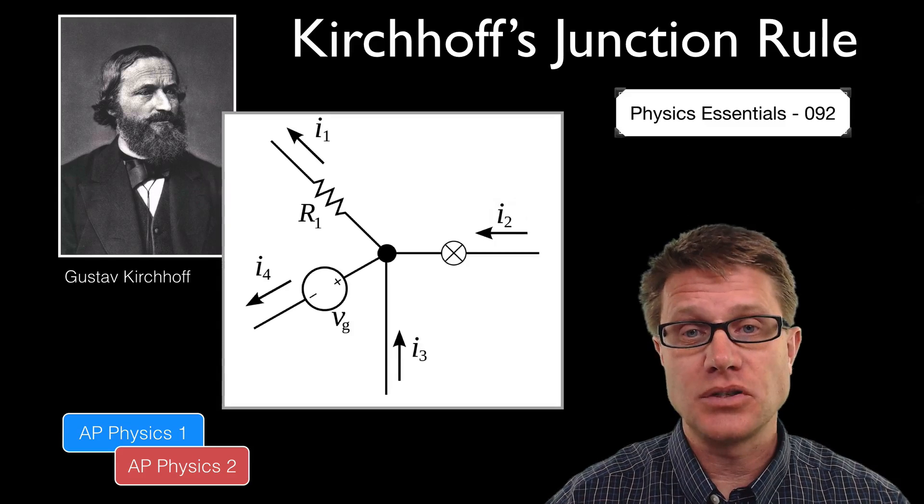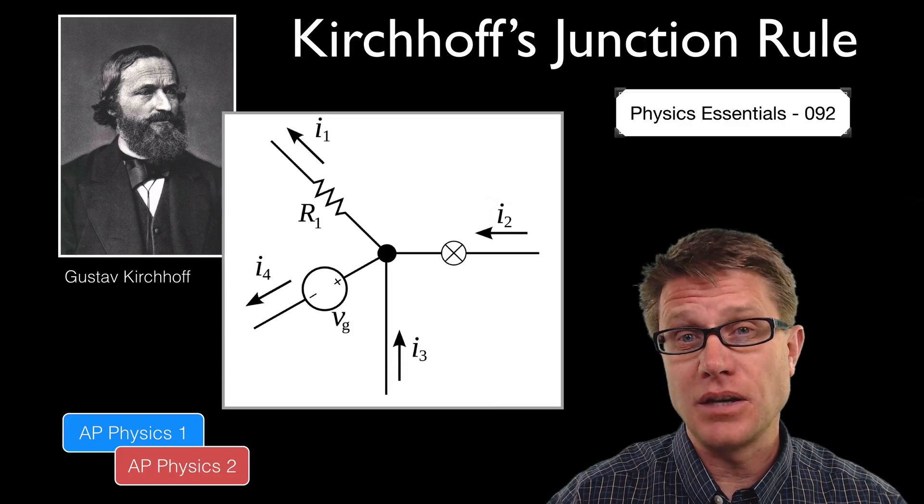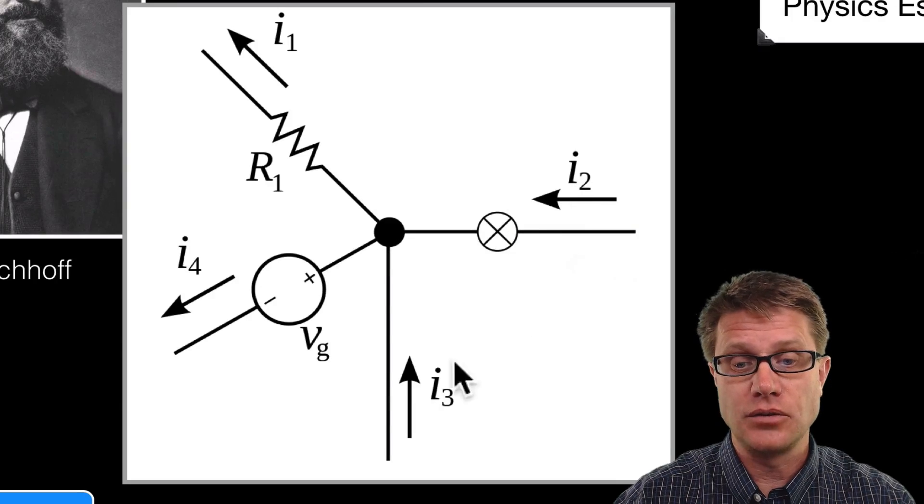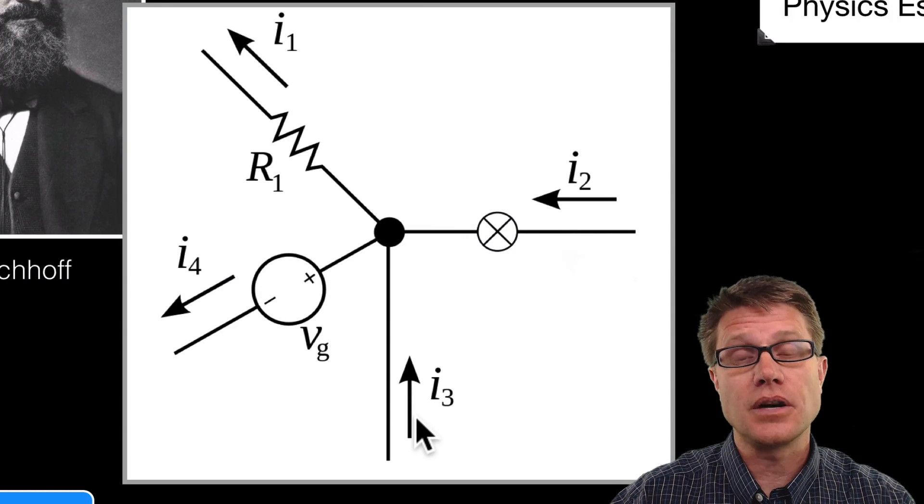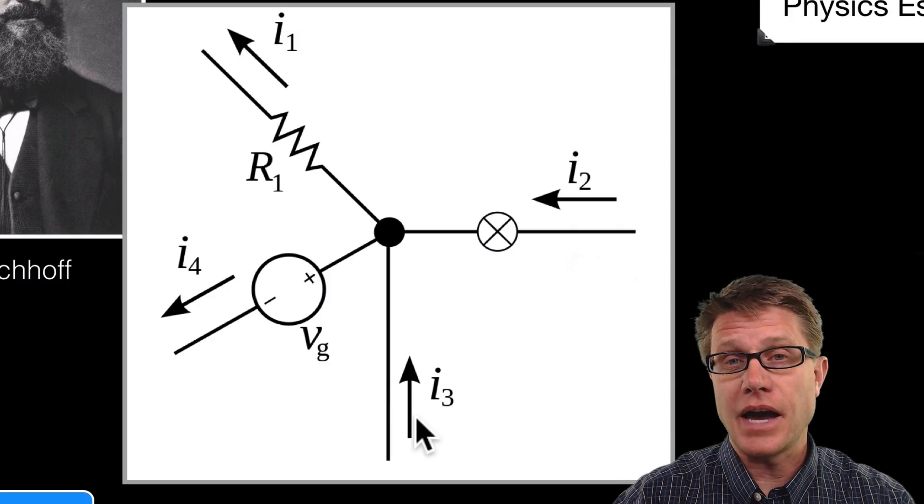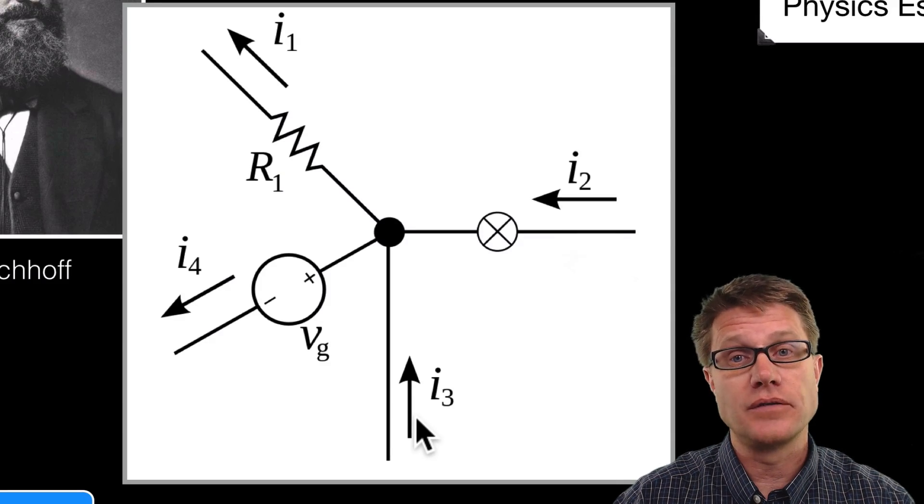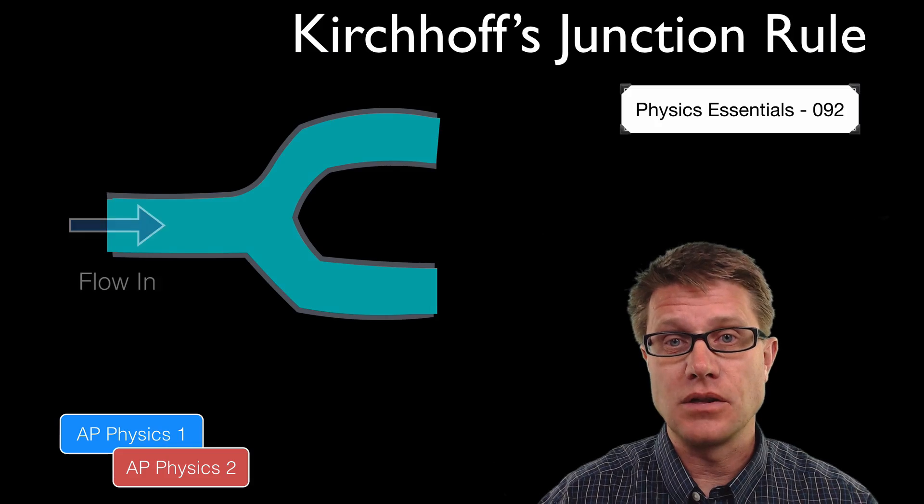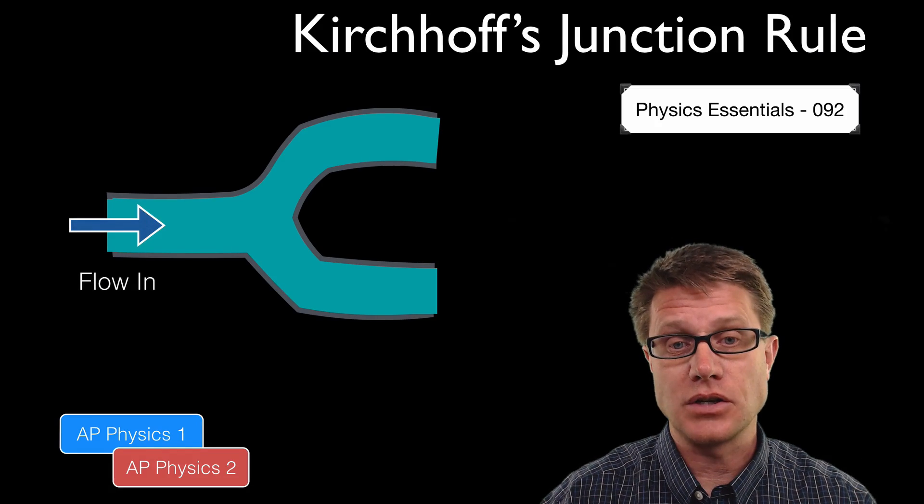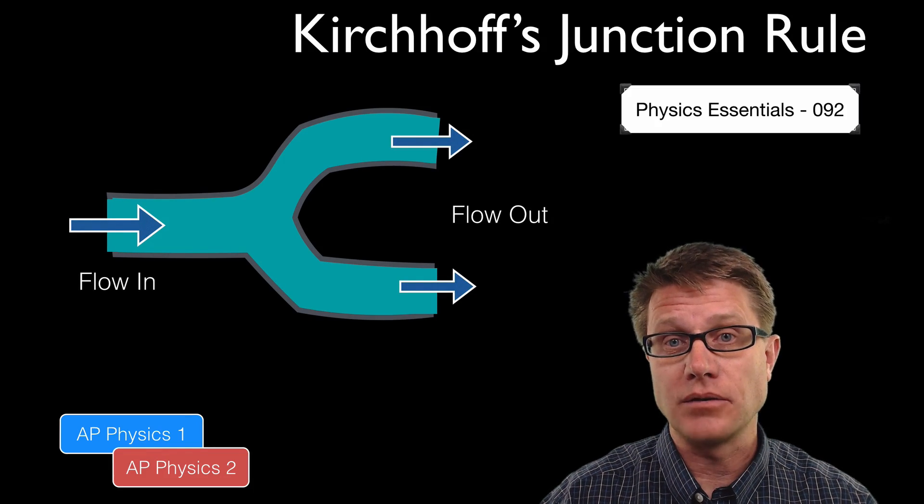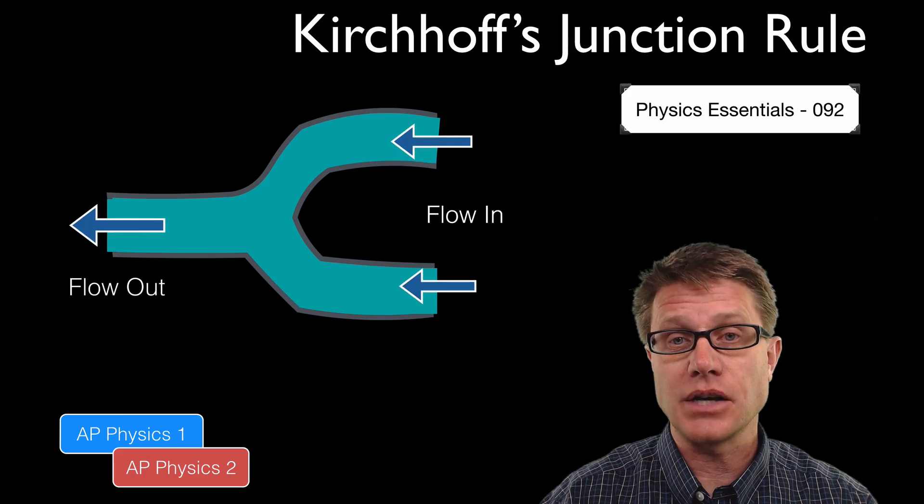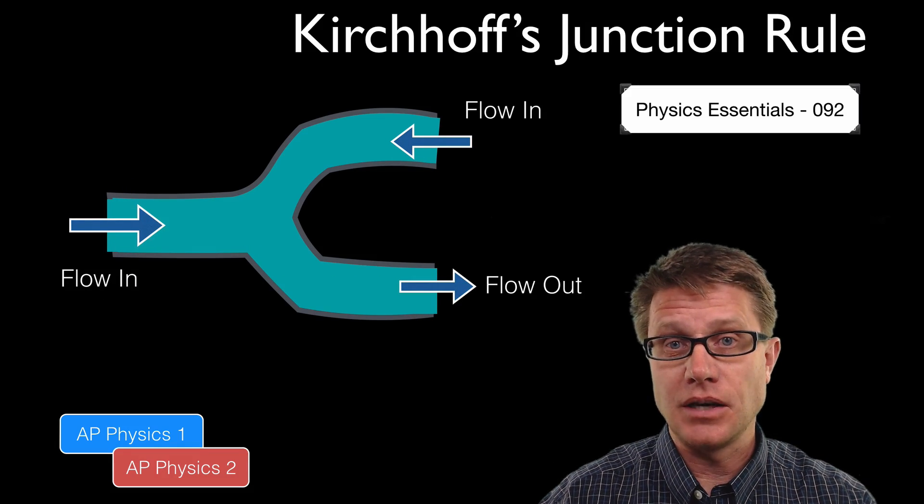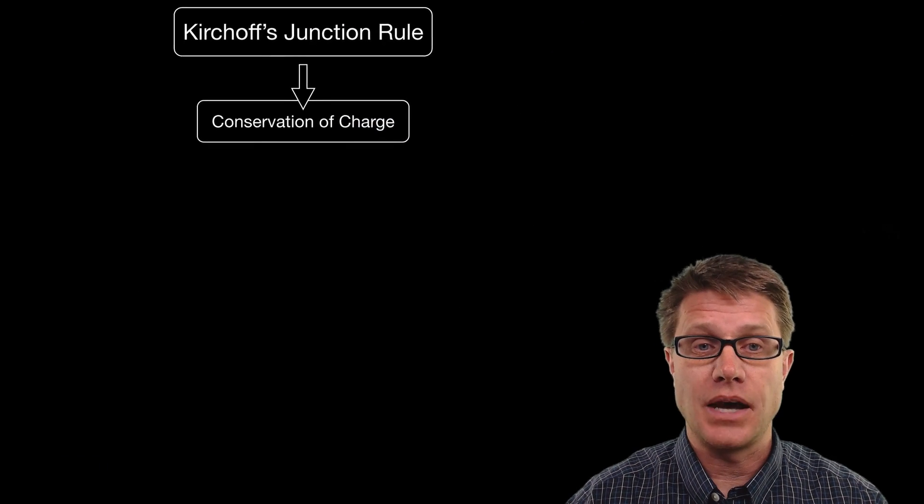And so it is very simple. It just says the current that we have coming into a junction, so for example if this is a junction, the current of I2 plus I3 has to equal the current coming out of the junction. It is an application of the conservation of charge in physics. Or if we were to use a pipe and water analogy, the flow coming into a junction has to equal the flow coming out. But the flow could be in this direction or the flow could be in this direction. The sum of the flows coming in has to equal the sum of the flows coming out.